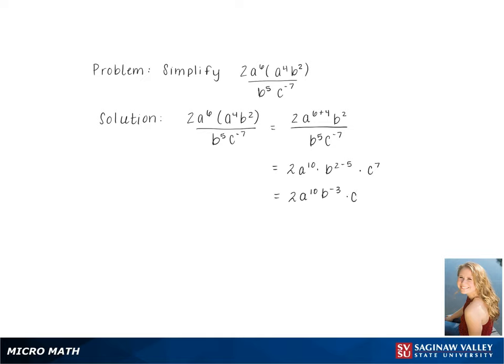Simplifying gives us 2a to the 10th b to the negative 3rd times c. Then we get 2a to the 10th c to the 7th over b to the 3rd as our final answer.